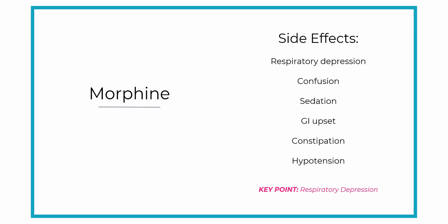The most common side effects of morphine are confusion, sedation, low blood pressure, and constipation. The number one life-threatening side effect is respiratory depression. All of these effects are due to the CNS depression that morphine causes.